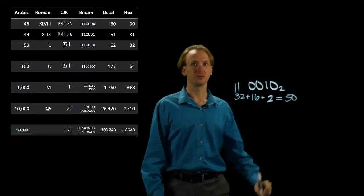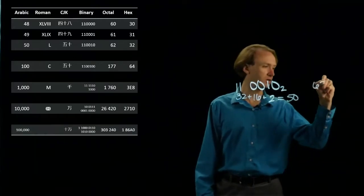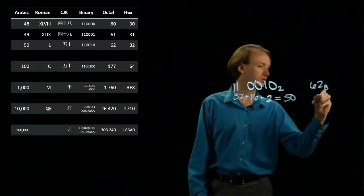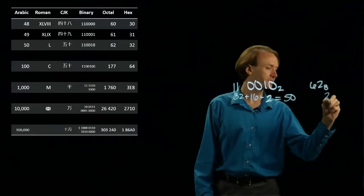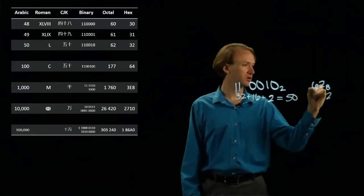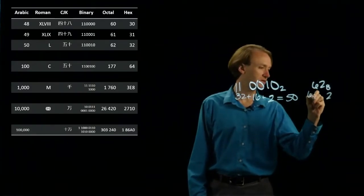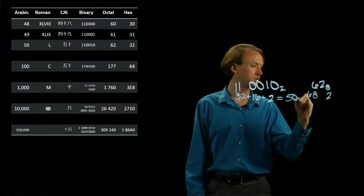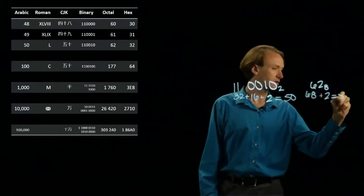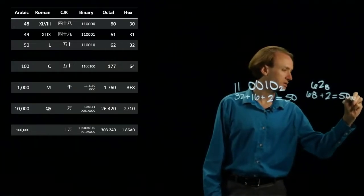If I do this with 62 in octal, well 2 in octal is 2 in decimal. The 6 in octal becomes 6 times 8 which is 48 plus 2 is 50 in decimal.